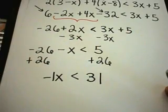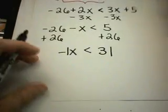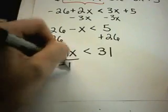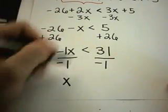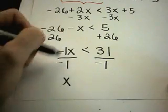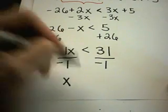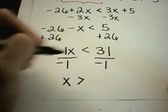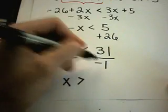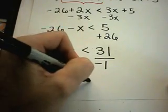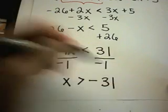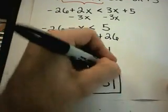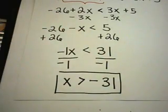You can think about -x as being -1x. So if I divide both sides by -1, I'll get x. But here I have to be careful. I'm dividing by a negative number. The inequality flips. And 31 divided by -1, a positive over a negative is a negative. 31 over 1 is just 31. And that will be my solution.